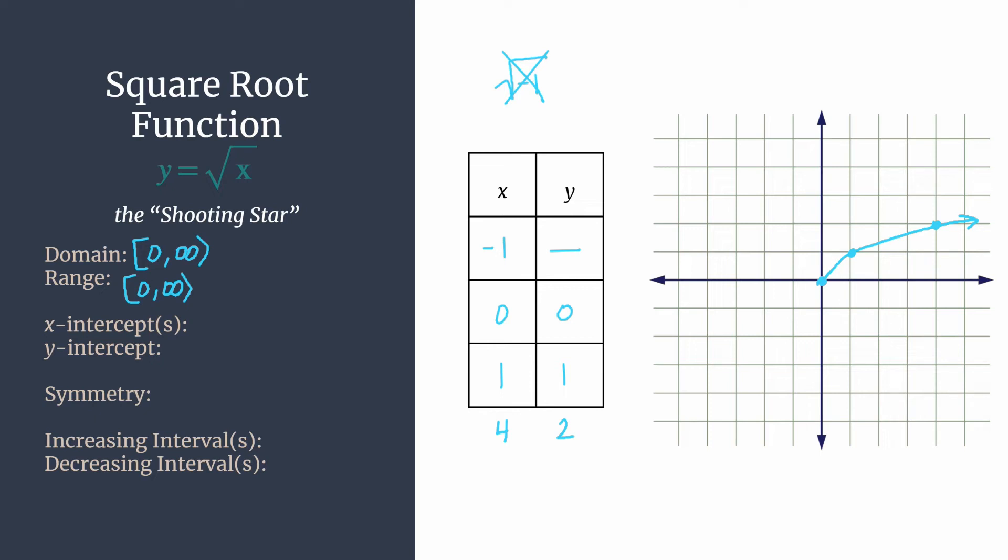All right, both our intercepts, the x and y intercepts, are at the origin. And remember, our two types of symmetry, y-axis and origin.